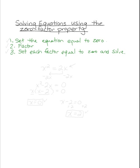Let's do an example. x squared equals 2x. This property only works on equations. First, we want to set the equation equal to zero. That means moving the 2x over to the other side. Since it's positive 2x, I will subtract 2x from both sides. This gives me x squared minus 2x equals zero. So I've completed step one.